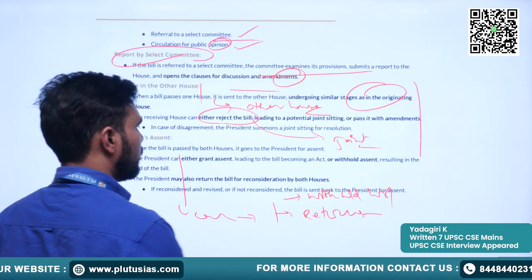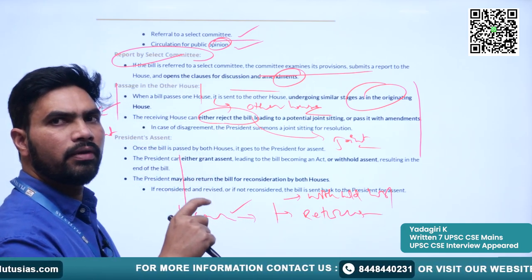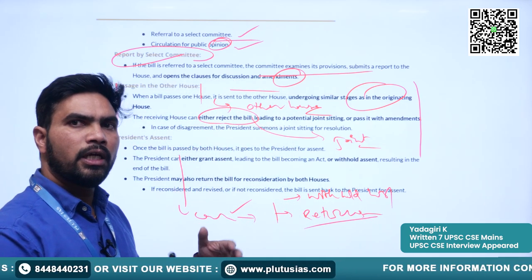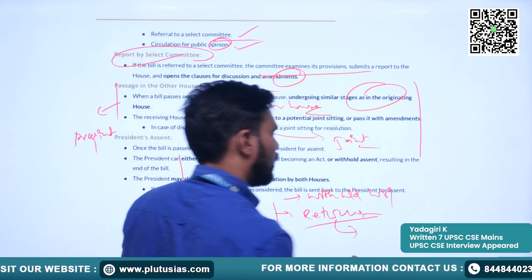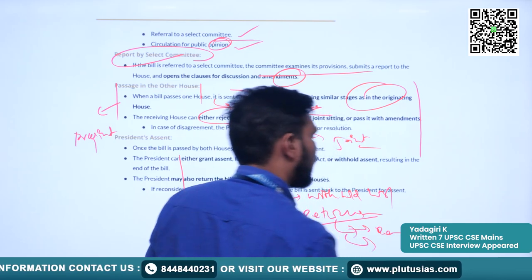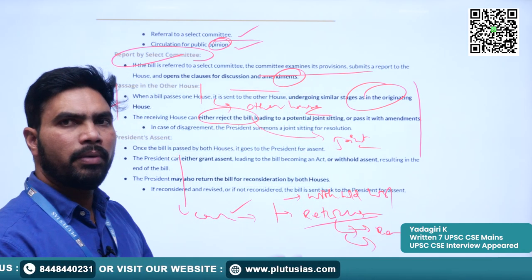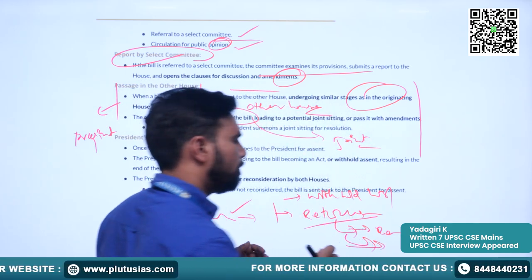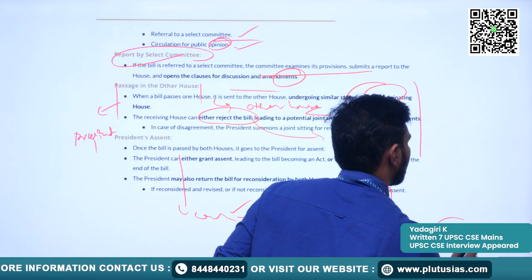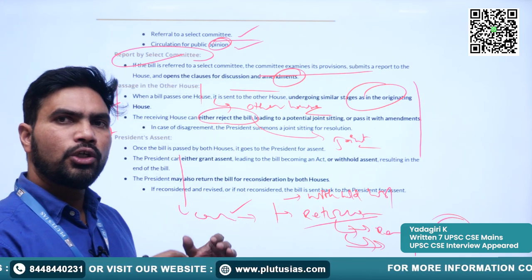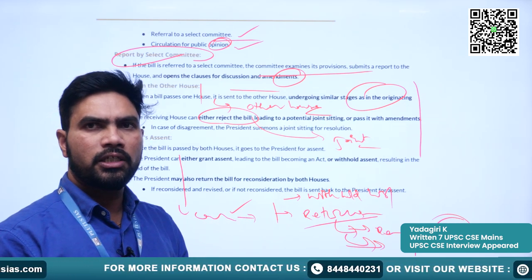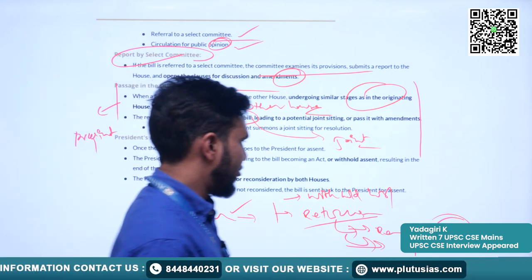When a bill is submitted for the assent of the president, he can give his assent — in which case it becomes law — or he can return the bill for reconsideration, or he can withhold his assent, which we call a pocket veto. If the bill is sent back by the president, Parliament has the option of reconsidering it, making amendments, and again passing the bill in both houses. Or it can submit the bill as-is for the approval of the president. In any case, once the bill comes back to the president the second time, the president has to give his assent.